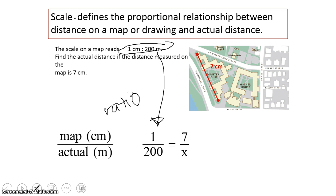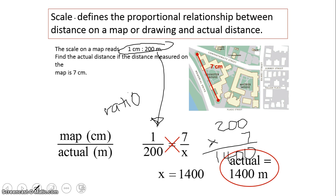To find x I can simply cross multiply. 1 times x is x and 7 times 200 is going to be on the other side which is 1400. And if you cannot do that in your head, don't worry, we're going to just write it on the side to show your work. And so that tells me that I've got the actual distance measuring 1400 meters.